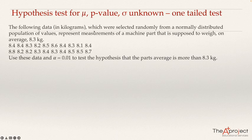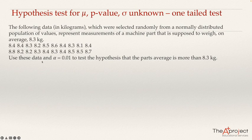The following data in kilograms, which were selected randomly from a normally distributed population of values, represents measurements of a machine part that is supposed to weigh on average 8.3 kg. We are going to use this data and a level of significance of 0.01 to test the hypothesis that the part's average is more than 8.3.